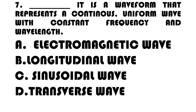Number 7. Blank — it is a waveform that represents a continuous, uniform wave with constant frequency and wavelength. A. Electromagnetic Wave. B. Longitudinal Wave. C. Sinusoidal Wave. D. Transverse Wave.